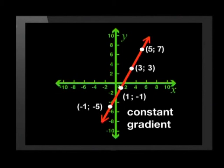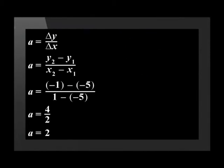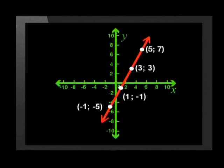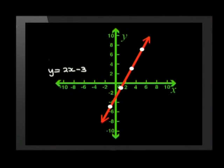We also saw that the gradient of a linear graph is constant and is given by the formula gradient is equal to the change in y divided by the change in x. We can work out the gradient from the table, from the graph, or from the formula. We also found that the y-intercept is the point (0, y), where the y value is the same as the q value in the formula.